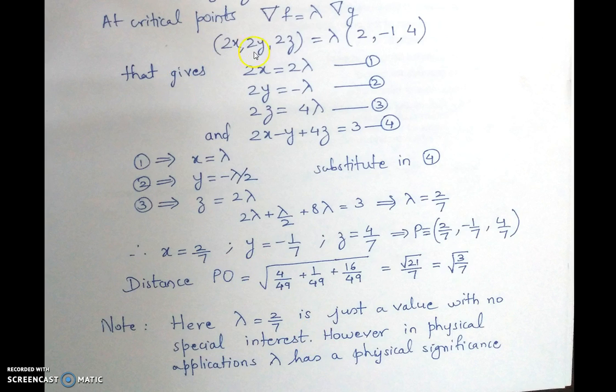So now this will give us the 3 equations that we can have when you compare the components. So equations 1, 2, 3. And we have how many variables now? We have 4 variables: x, y, z and lambda, and only 3 equations.